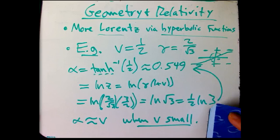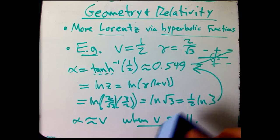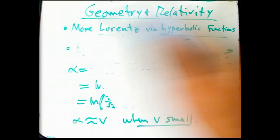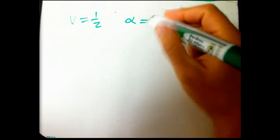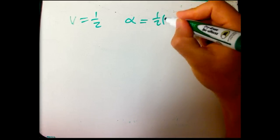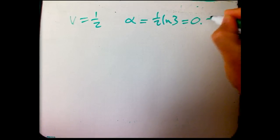So let's go ahead and add that to itself. Let's see. If we take, if we double alpha, let me just see what I can erase here. Actually, let me erase everything and just rewrite a couple things. So we have V equals 1/2, and alpha equals 1/2 ln 3 is 0.549.